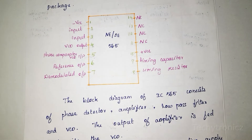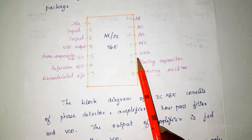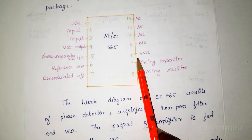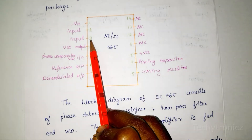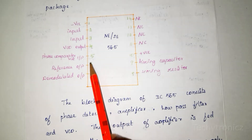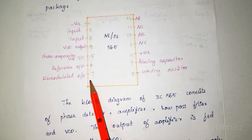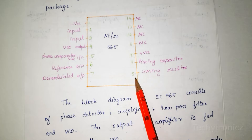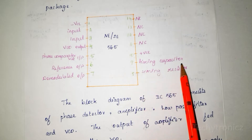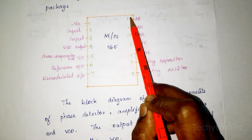This is the pin diagram — it is a 14-pin IC. Pin number 1 and 10 are the positive and negative supply. Pin number 2 and 3 are the input to the phase detector. Pin number 4 is the VCO output. Pin number 5 is the phase comparator VCO input and pin number 6 is the reference output. Pin number 7 is demodulated output, pin number 8 is the timing resistor, pin number 9 is the timing capacitance. There is no connection on pins 11 to 14.